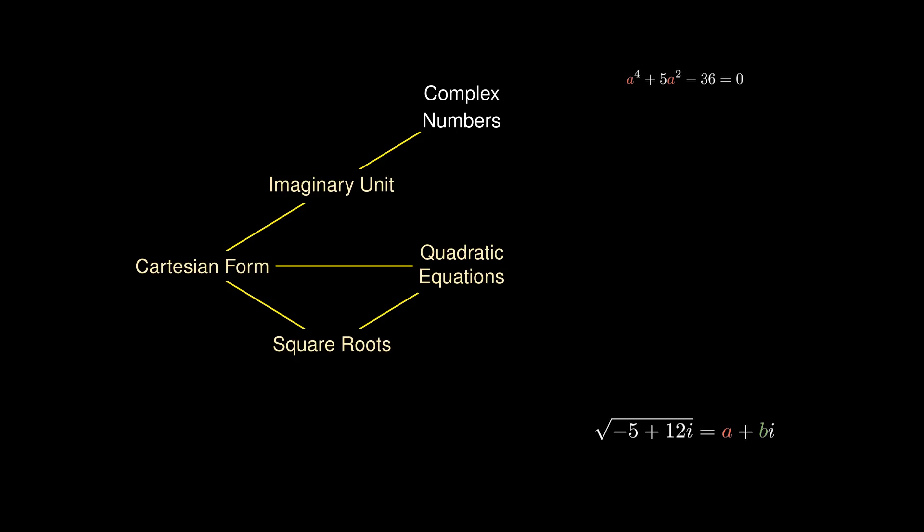While fourth-degree polynomials are not easy to factor in general, we can regard a⁴ as the square of a², making this a quadratic equation in a². Applying the quadratic formula gives two solutions: -9 and 4. Since a is a real number and we cannot square a real number to get a negative, we reject -9.